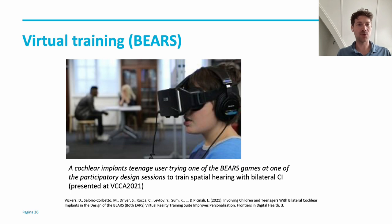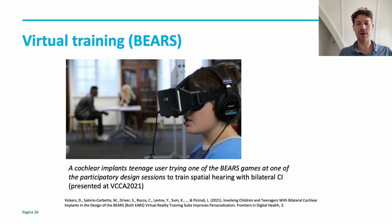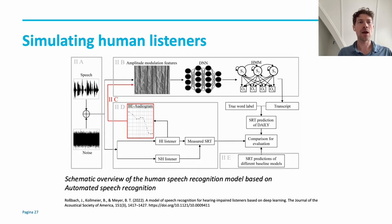Another cool example is virtual training. The group from Cambridge led by Debbie Vickers created virtual reality glasses that teenagers with bilateral cochlear implants could use to improve their spatial hearing — presented at the VCCA 2021 and published in Frontiers in Digital Health. You can also use these networks to simulate human listeners — as a researcher or clinician you can test a setting in silico, and if it shows improvement, provide it to your patient, allowing you to test many more settings than is feasible in real life. Bernd Meyer presented this at the VCCA 2022.